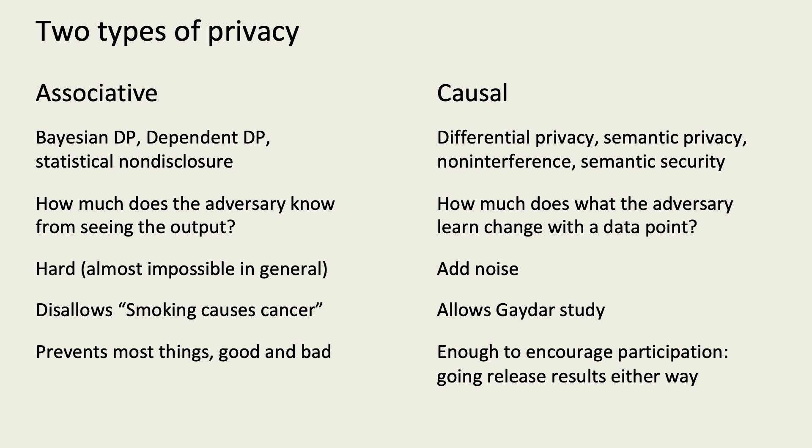On the other hand, causal definitions, like differential privacy, focus on preventing someone's participation in a study from causing information leakage, and therefore may be sufficient to encourage participation in the study. These properties are also easier to provide, simply by adding noise. However, they allow studies of questionable value, such as the Gaydar study, which trained a machine learning model to predict who is gay from photos. It is debatable whether this study violated privacy or some other value.